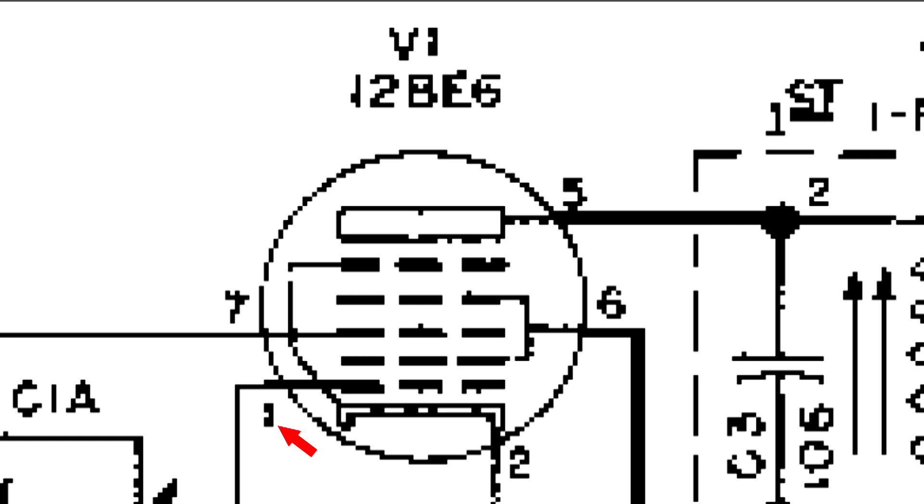It's right next to it, so it has the most control over the amount of electrons passing through it. The more negative the control grid is, the less electrons pass through from the cathode to the plate.